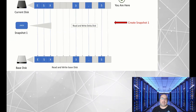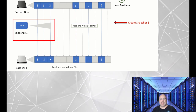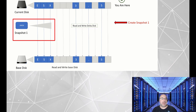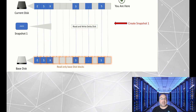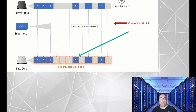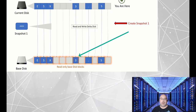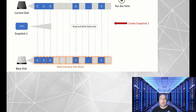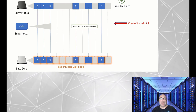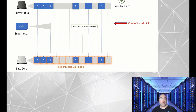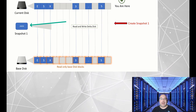A new file, snapshot1.vmdk, is created and the base disk becomes read-only. From this point on, any changes you make to the virtual machine are recorded in the snapshot1.vmdk file.